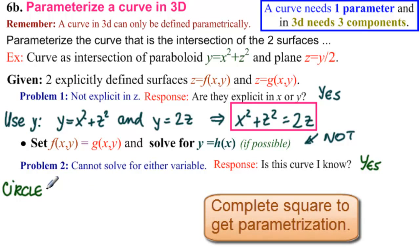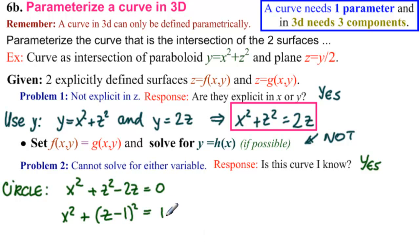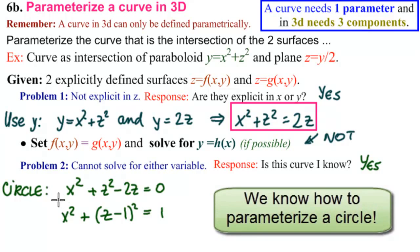What do we do? We complete the square. So that means we group the things. x squared is all by itself. And then plus z squared minus 2z equals 0. We complete the squares. So this one's already completed, no problem. Plus z, we need half of that, minus 1 squared. And then we've added that one, so we need to add it on the other side.